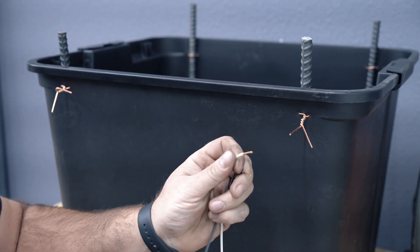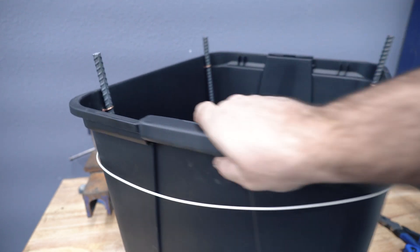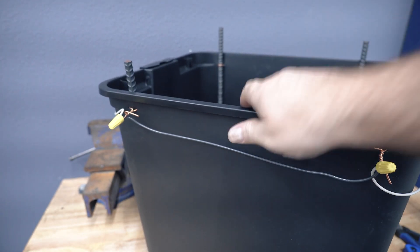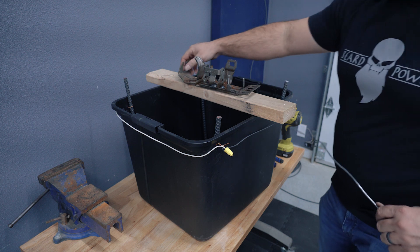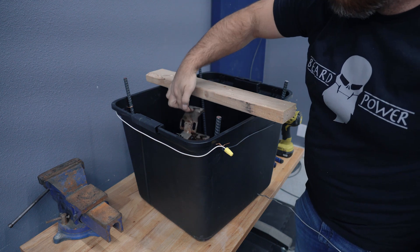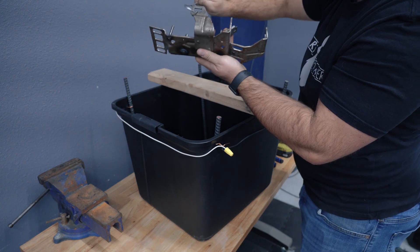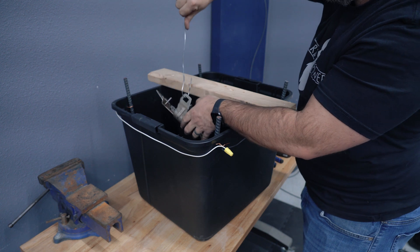I used wire nuts and the extra wires out of the Romex to tie all the rebar together. Then I grabbed a piece of scrap 2x4 and laid it across the top of the tote, and used some steel wire to suspend the part from the 2x4.